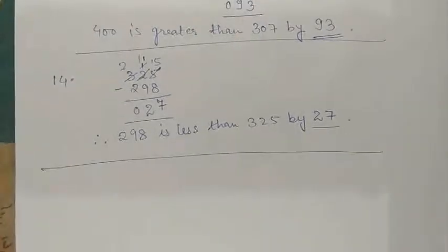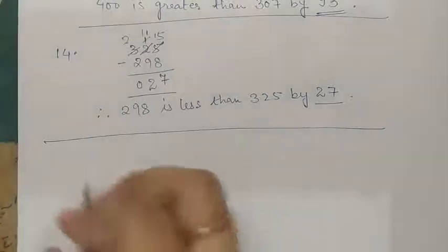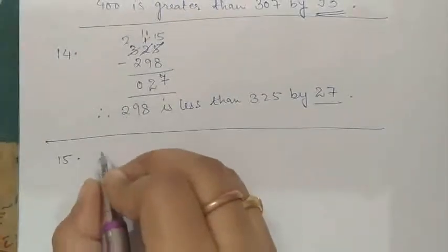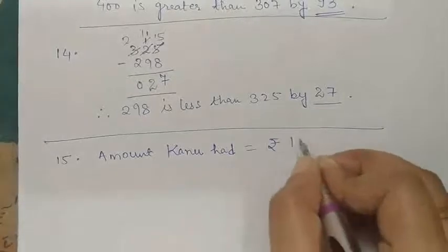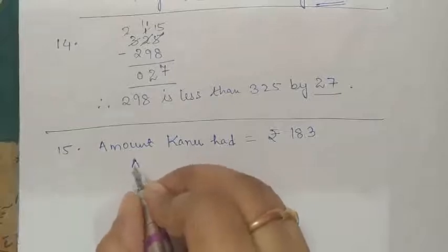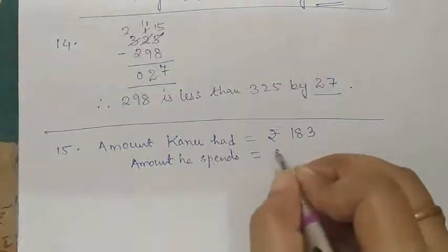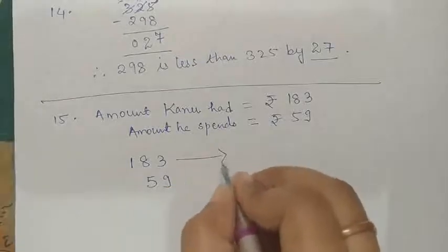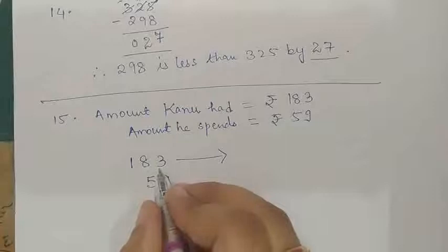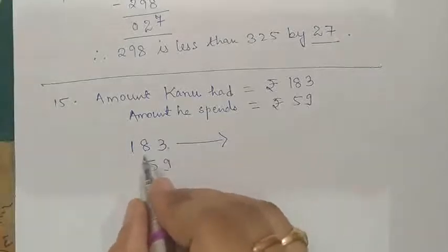The last question: Kanu had rupees 183 with him. He bought a book for rupees 59. Estimate the amount left with him. Here we have to estimate, so we will write: amount Kanu had is equal to rupees 183, and amount he spends is equal to rupees 59. Now we have to round off 183 and 59 to the nearest tens. 183 will become 180 and 59 will become 60.